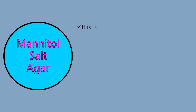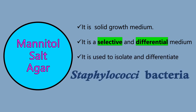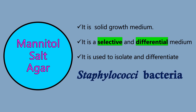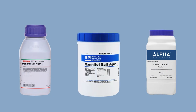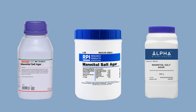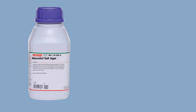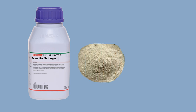Mannitol salt agar is a type of solid growth medium. This is a selective and differential medium. It is used to isolate and differentiate Staphylococci bacteria. Mannitol salt agar is also available commercially. Companies like HiMedia and many others manufacture MSA agar in dehydrated forms. This is a commercially available MSA agar media bottle from HiMedia. This bottle contains MSA agar powder, which is a mixture of different ingredients.